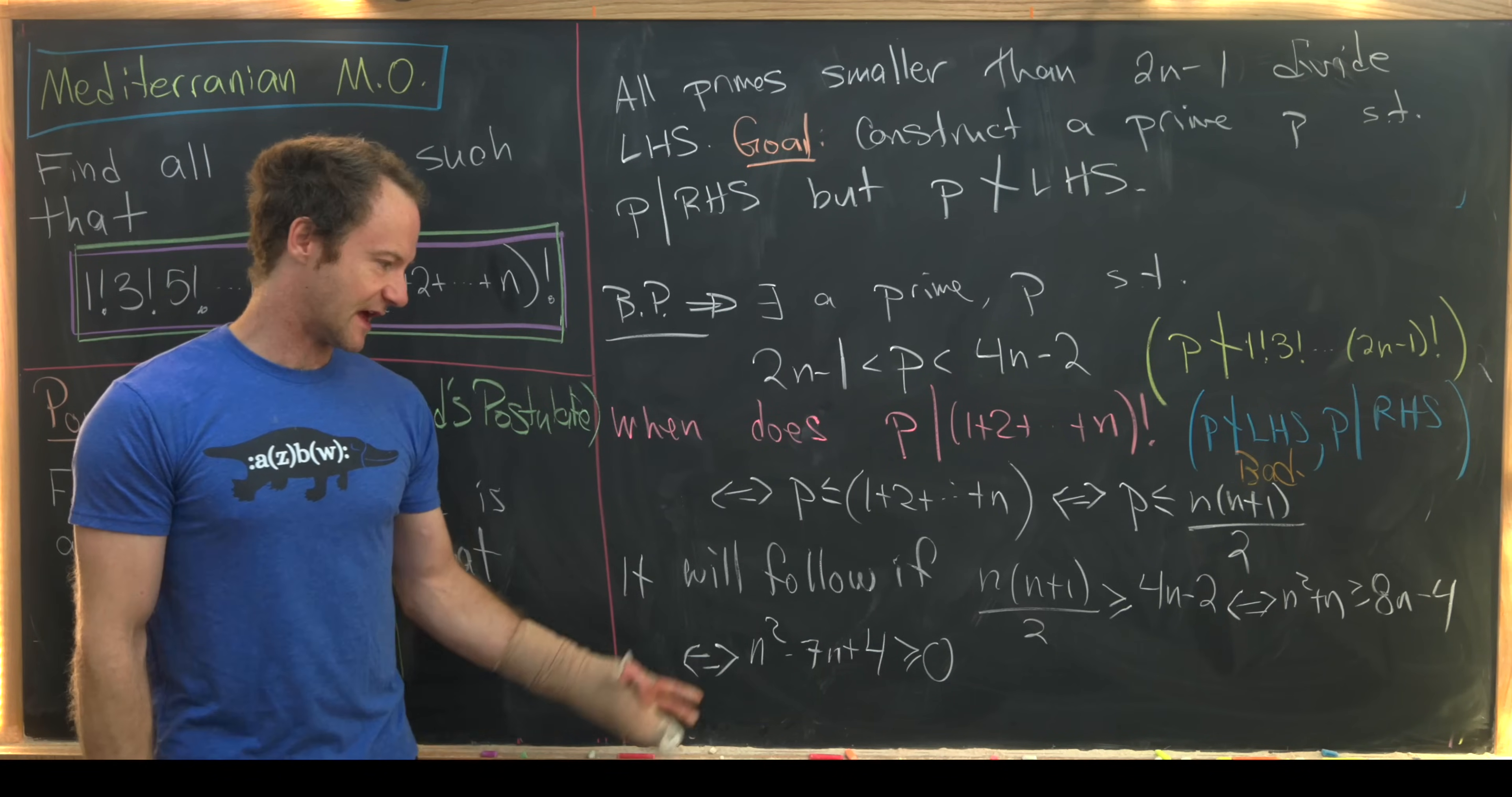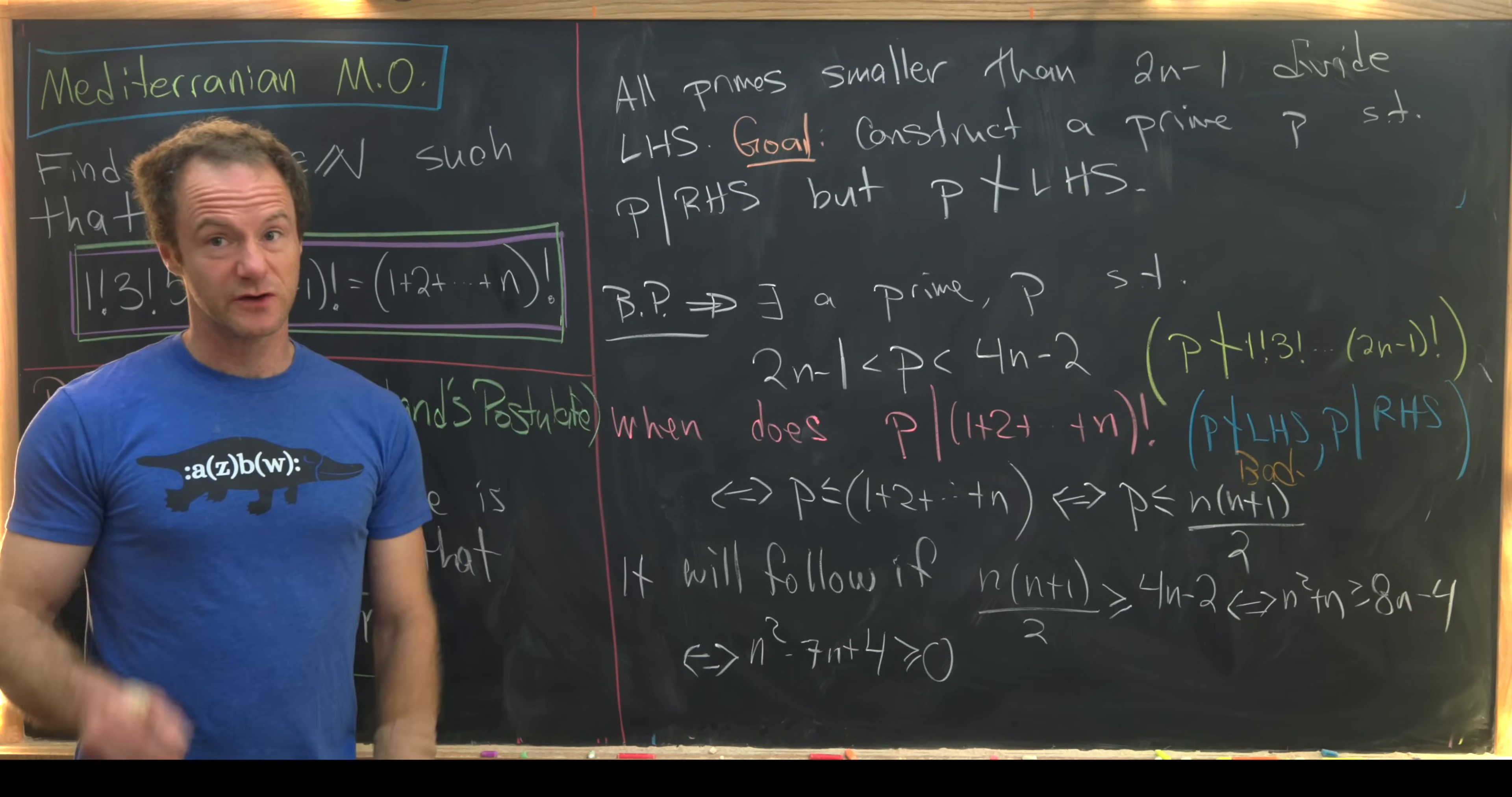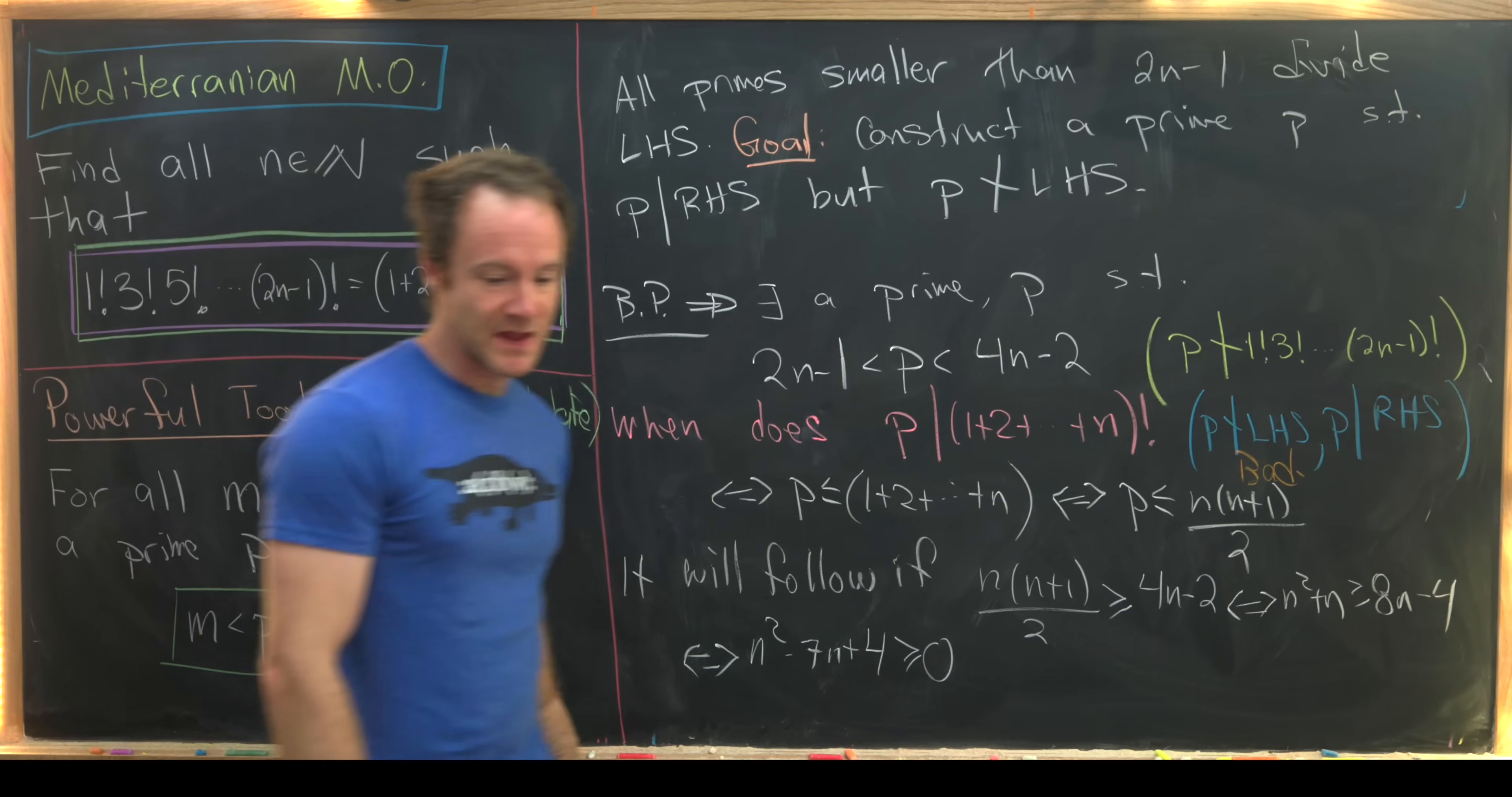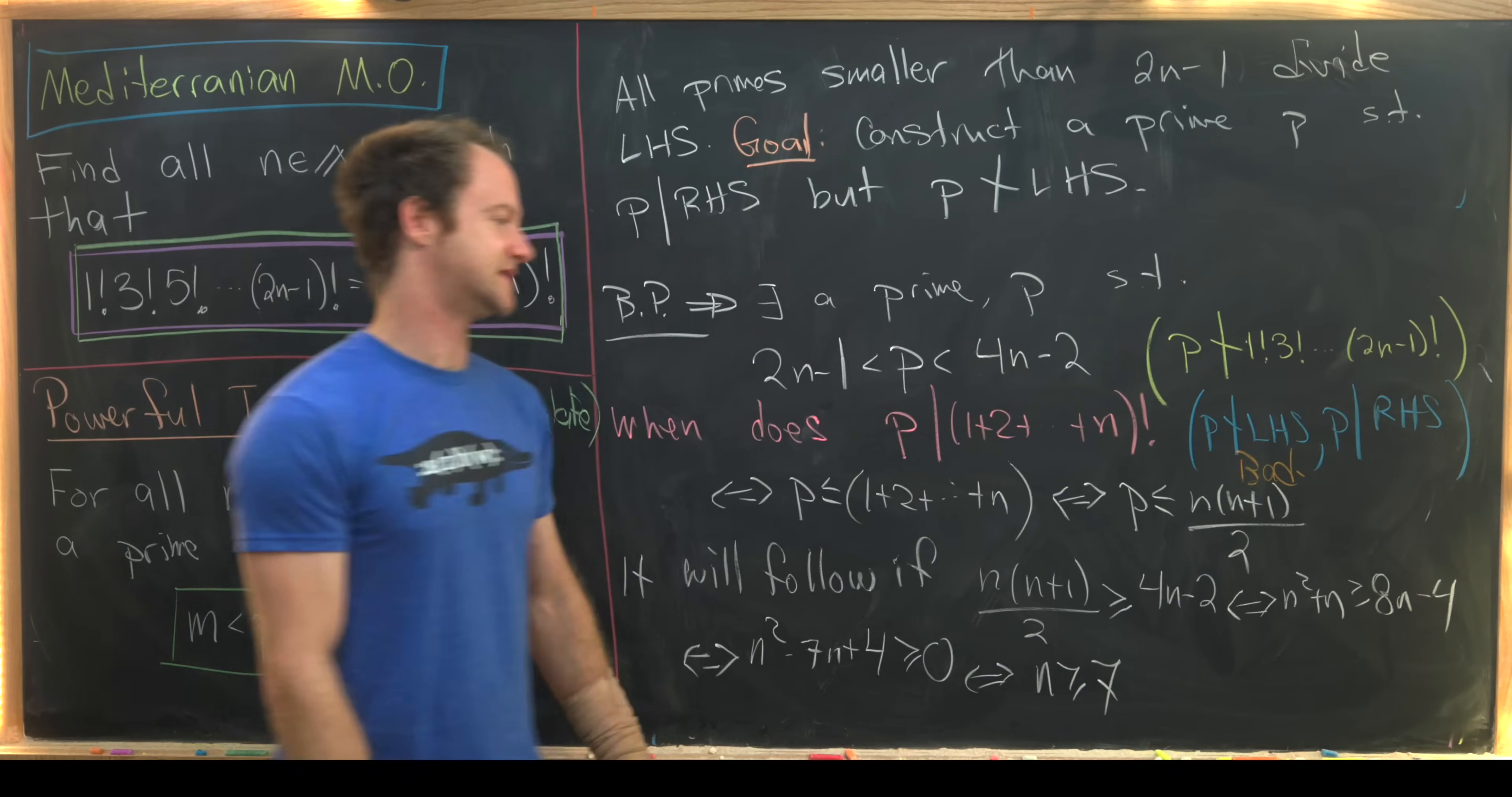Now I'll let you guys figure that out. You can find the roots of this quadratic equation and then maybe look for the closest integer less than or equal to those roots as appropriate, and what you'll see is that this occurs if and only if n is bigger than or equal to 7.